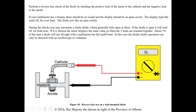To perform a reverse bias check, take the positive lead to the cathode and the negative lead to the anode. If the meter has a beep, there should be no sound and the display should show an open circuit — typically reading OL for overlimit. The diode acts like an open switch. During checks, you may encounter a faulty diode, which generally fails open or shorted. If open, it reads OL for both tests. If shorted, the meter displays the same value when leads are touched together. About 1% of the time a diode will test correctly with a multimeter but fail under load — in that case, fault detection requires an oscilloscope or voltmeter.